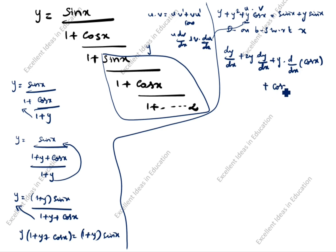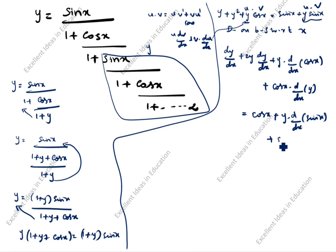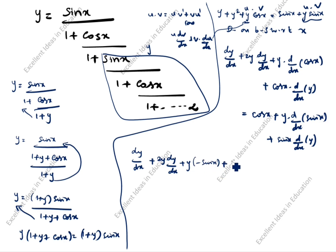Applying the product rule: y times d/dx(cos x) plus cos x times d/dx(y), equal to differentiation of sin x which is cos x, plus — again applying the product rule — y times d/dx(sin x) plus sin x times d/dx(y). So dy/dx plus 2y·dy/dx plus y times (-sin x) plus cos x·dy/dx equals cos x plus y·cos x plus sin x·dy/dx.